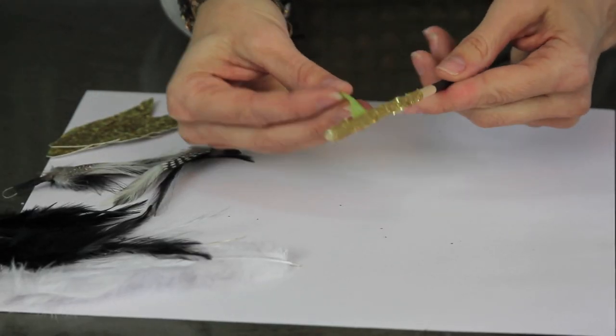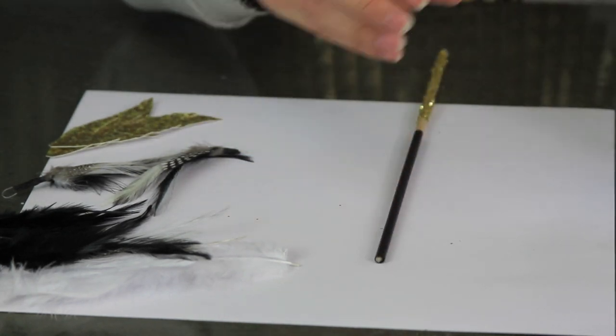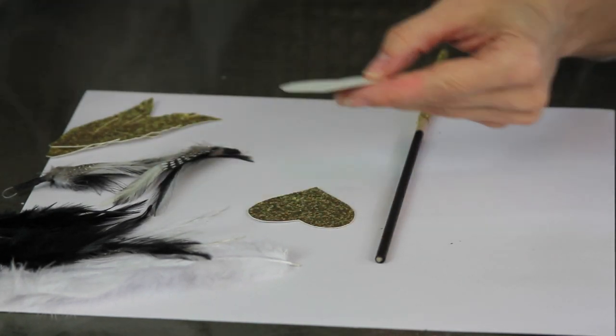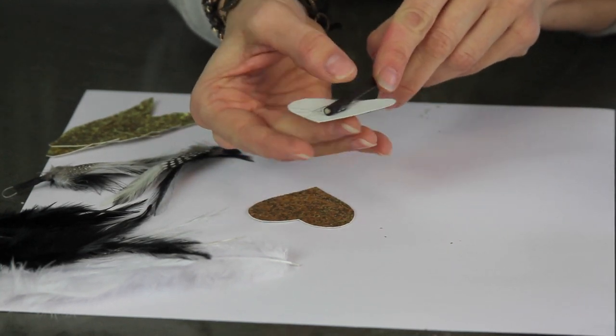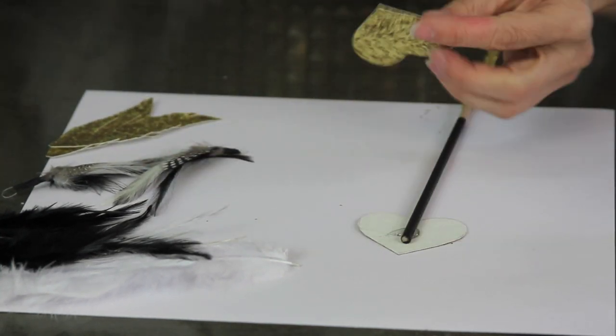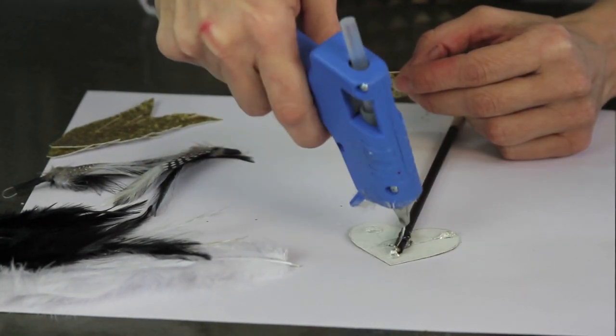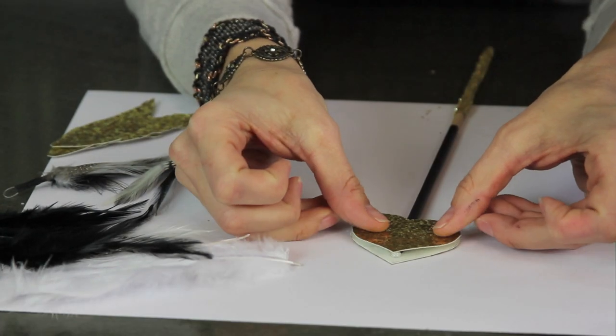Now we get to the fun part where we get to assemble our arrow. I'm gonna start by doing the tip of the arrow and I'm gonna take one of my glitter hearts and glue it on with my hot glue gun. And then I'm gonna take the other glitter heart and cover that on the back side so we have a double-sided glitter heart tip.